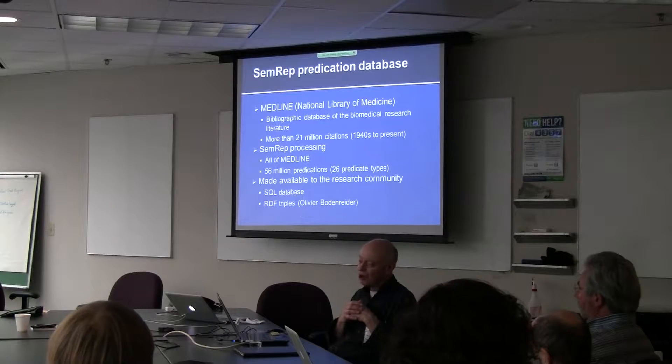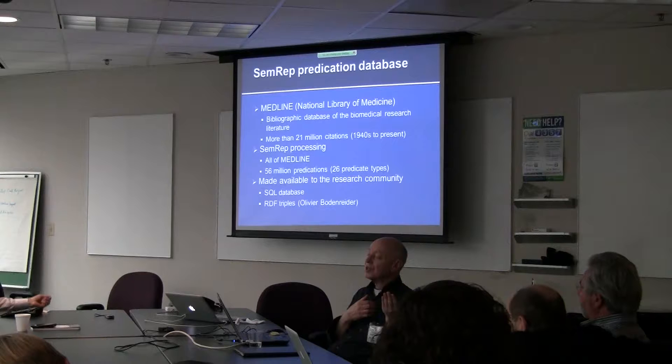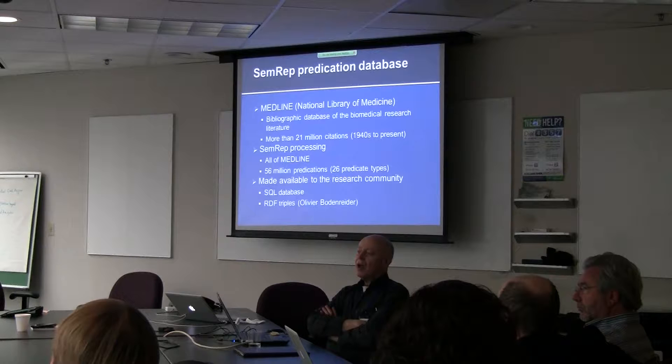If you want to know where all the abstracts that say aspirin treats headache, you can get that. But if you want to know what are all the different things that treat headache, you can also look at that. But if you look at the figures, you have 21 million abstracts and you only have 56 million predications. Many of the older ones are empty, largely because up until a certain point they only have titles.